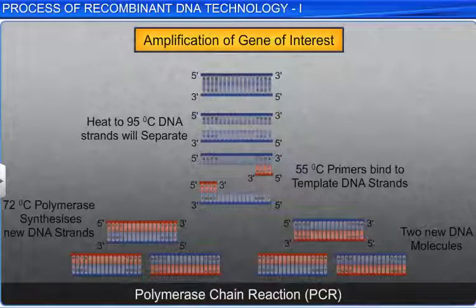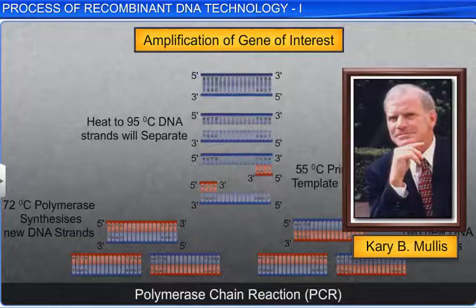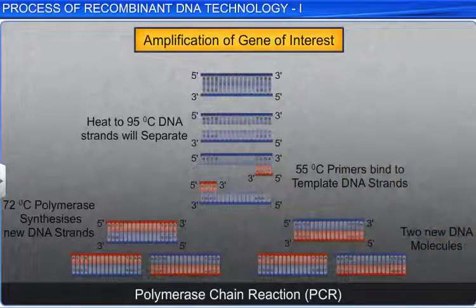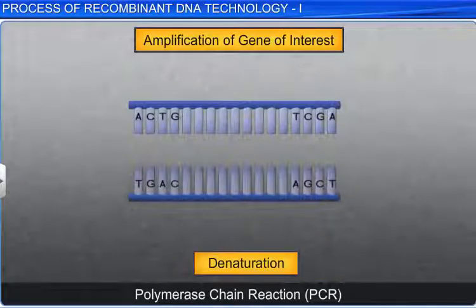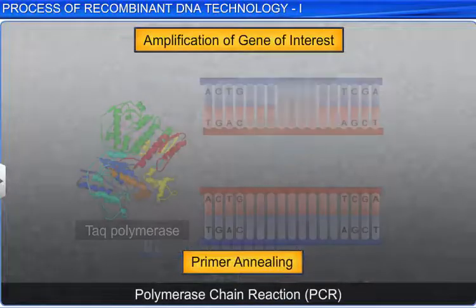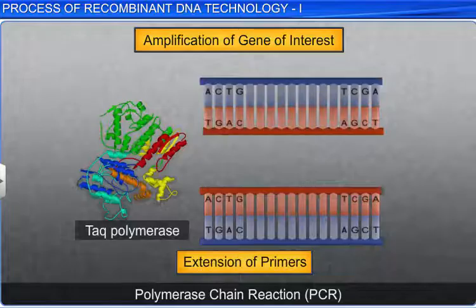The PCR technique was developed by Kary B. Mullis, who was awarded the Nobel Prize for chemistry in 1993. PCR has three steps: denaturation, primer annealing, and extension of primers.